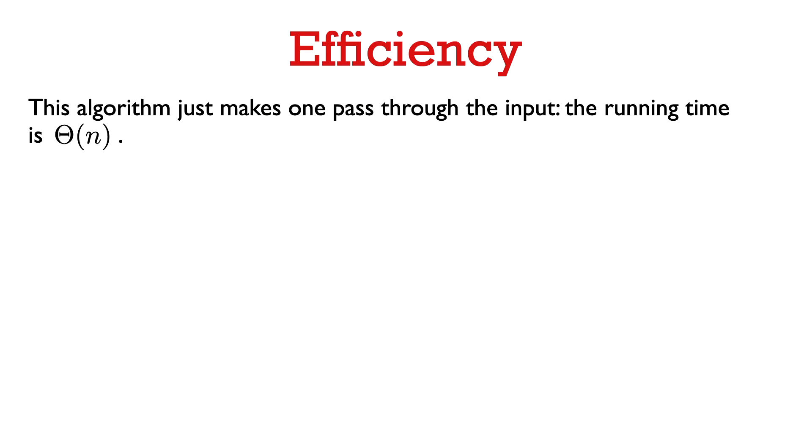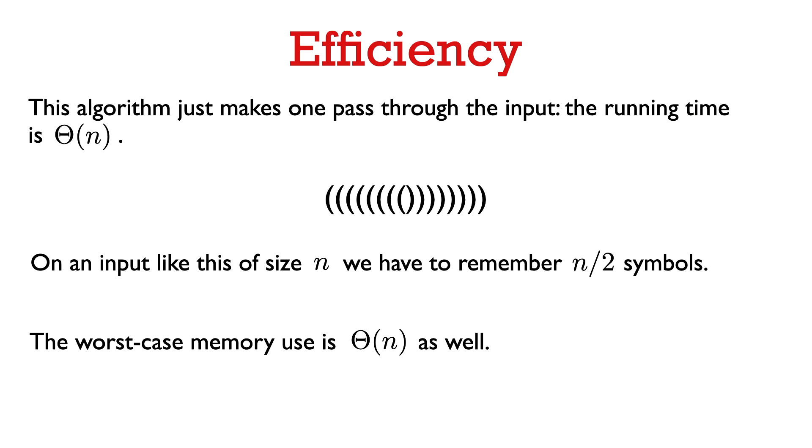This algorithm makes just one pass through the input. For each character we either add an element to the end of our data structure or read and remove the last element — operations we can perform with a vector in constant (or amortized constant) time. So the total running time is Θ(n). Regarding memory: for a string with n/2 opening parens followed by n/2 closing parens, we must remember all n/2 opening symbols, so the algorithm needs Ω(n) space. It also uses at most O(n) space, so the worst-case memory usage is Θ(n).